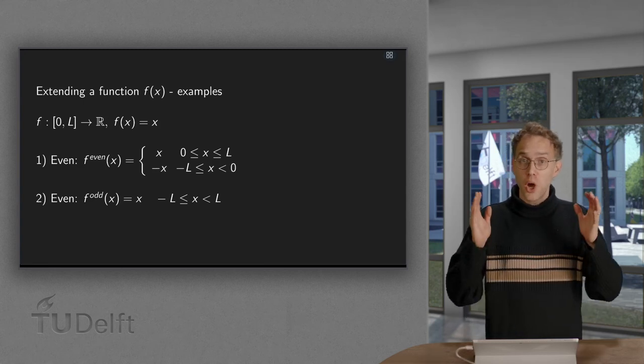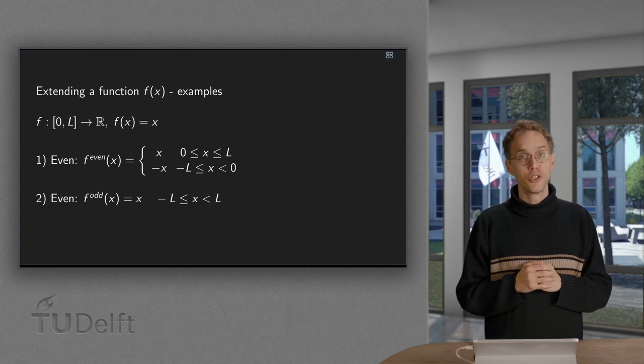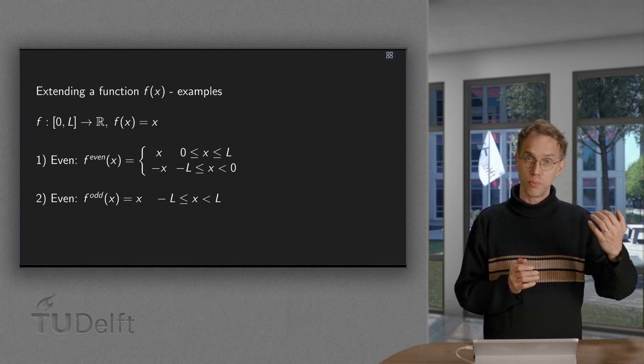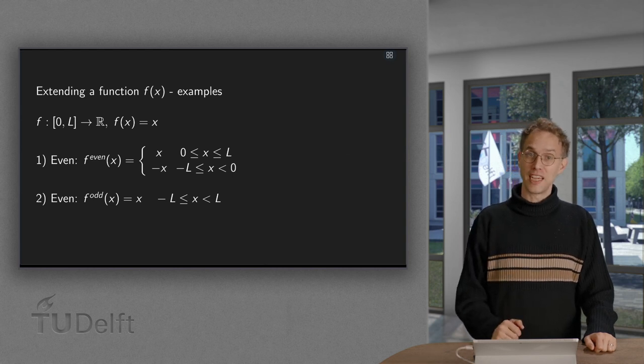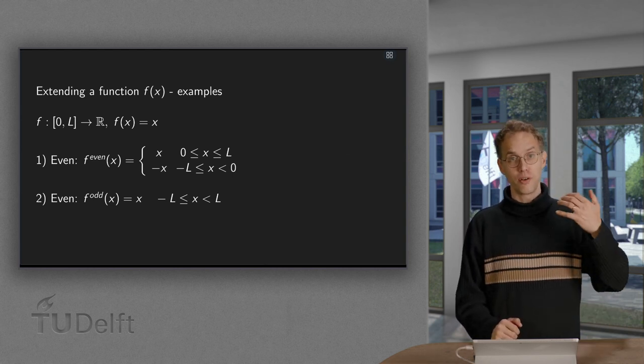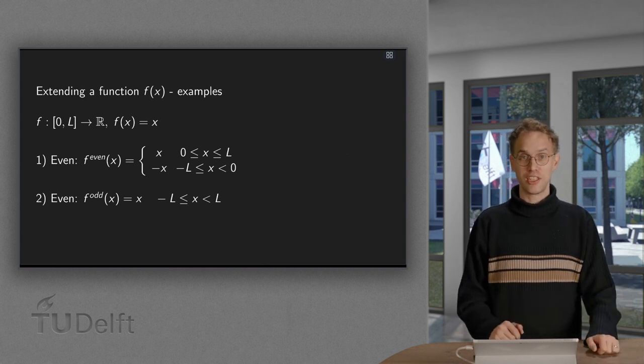If our function f is only given between 0 and l, we are free to choose some extension if we want to compute its Fourier series. In this video we will have some explicit f, and we will compute a Fourier series of both its even and its odd extension.